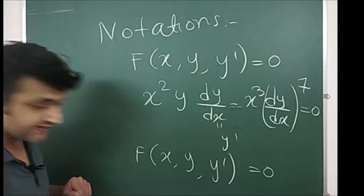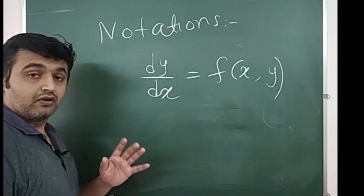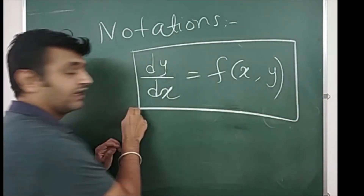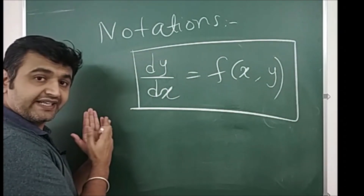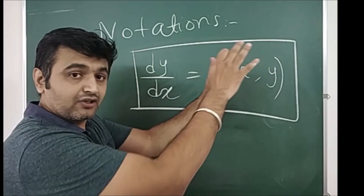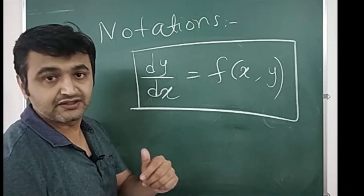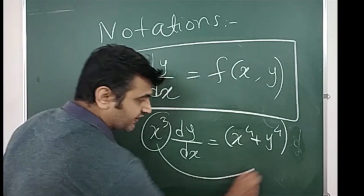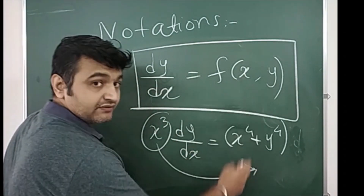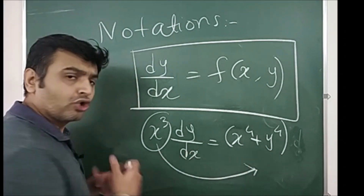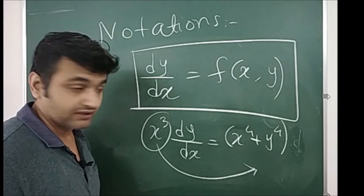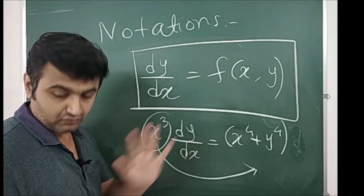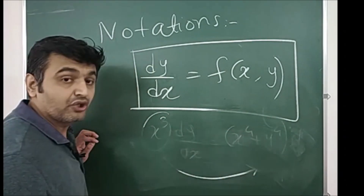The second notation you will come across is writing a first order linear differential equation as dy/dx = f(x, y). You take dy/dx on one side and everything else on the other side, and whatever is on the right hand side we call f(x, y). For example, you can put terms in the denominator and get f(x, y) = (x⁴ + y⁴) / x³. Note this is only true for first order linear differential equations; for nonlinear ones you won't be able to do this.